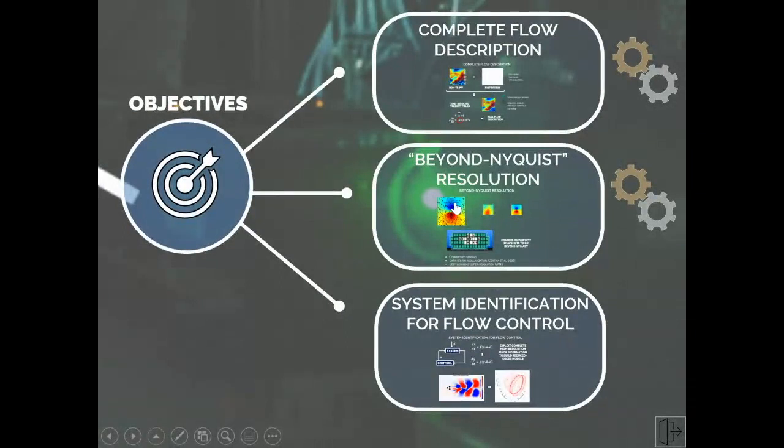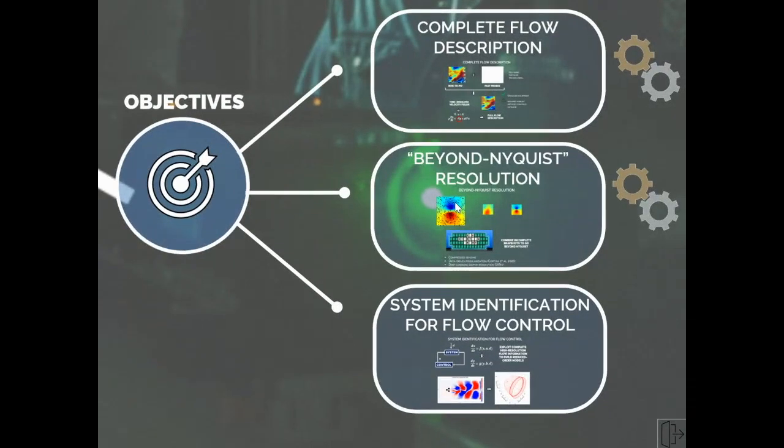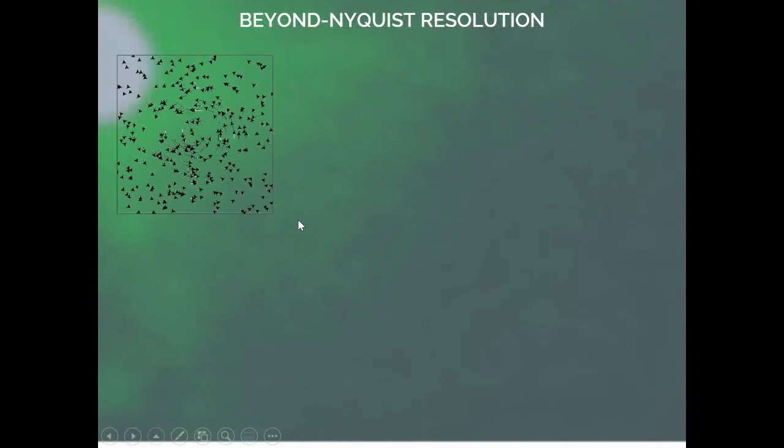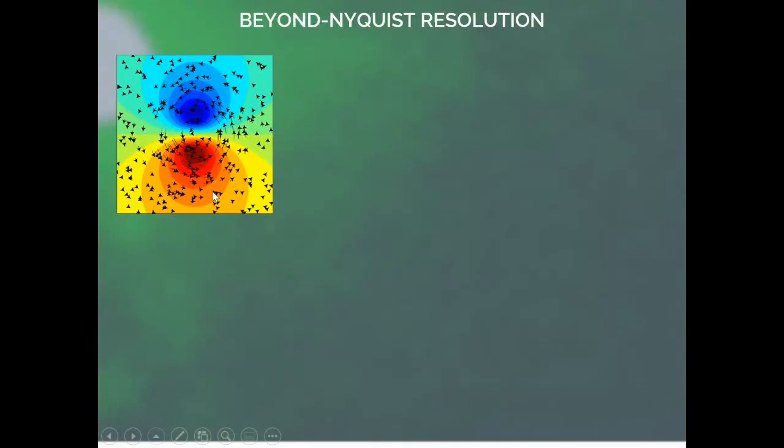The second principle is the high-resolution enhancement, the beyond Nyquist principle. The idea is the following. If we use PIV, we can only sample structures as far as we can put particles inside them. So which means that we can sample structures sufficiently big with respect to the spacing of the particles. So imagine that I have these velocity vectors that I've obtained by tracking my particles. Here I see that this vortex is sufficiently big so that I can safely say that this is a vortex.